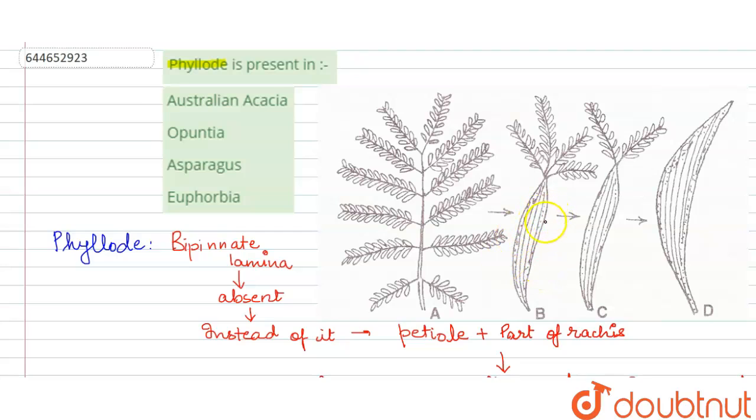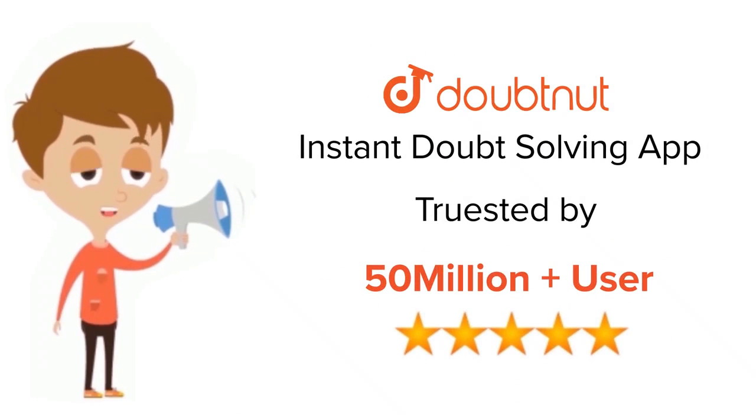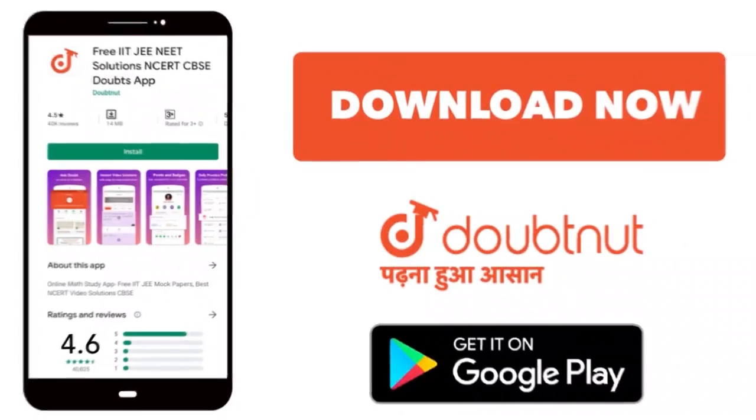And it has fewer stomata, so this is the phyllode. It is seen in the families of acacia, that is Australian acacia. As we can see here, the family of acacia, it is the Australian acacia which belongs to this family, so this is the correct answer. Thank you. For class 6 to 12, IIT-JEE and NEET level, trusted by more than 5 crore students, download Doubtnut app today.